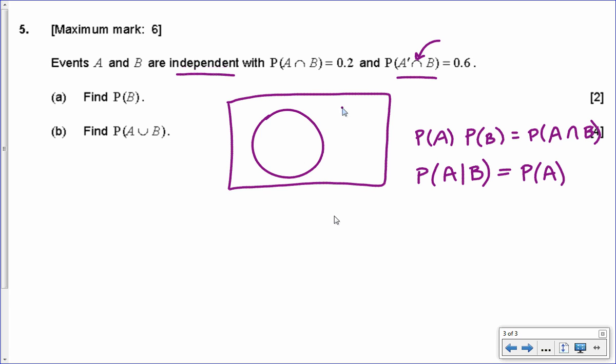So I have an A event and a B event, and I'm told that the intersection of A and B is point 2. Now, the intersection of not A with B, which is the point 6 given, means the region where the not A part of this Venn diagram, so everything outside of A, intersects with the region that is B.